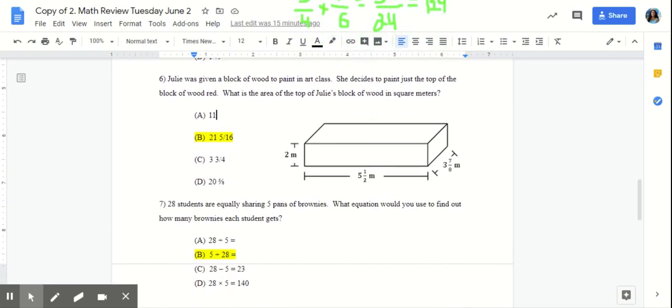Number six, Julie was given a block of wood to paint in art class. She decides to paint just the top of the block of wood red. What is the area of the top of Julie's block of wood in square meters?